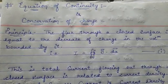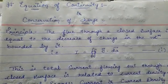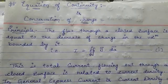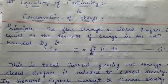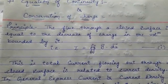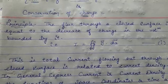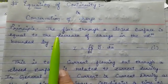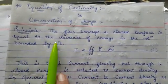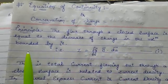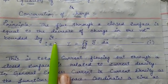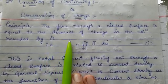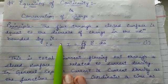Good afternoon students. Today we're going to derive the relation for the equation of continuity, or you can say, derive the expression for conservation of charge — one and the same thing. According to the principle of conservation of charge, the flux through a closed surface is equal to the decrease of charge in the volume bounded by it.